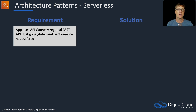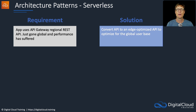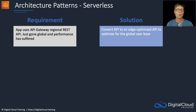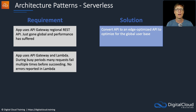An app uses an API Gateway regional REST API, and after going global, performance has suffered. In this case, you might convert the API to an edge-optimized API, which will optimize it for a global user base. Remember that an edge-optimized API leverages CloudFront points of presence — the edge locations.